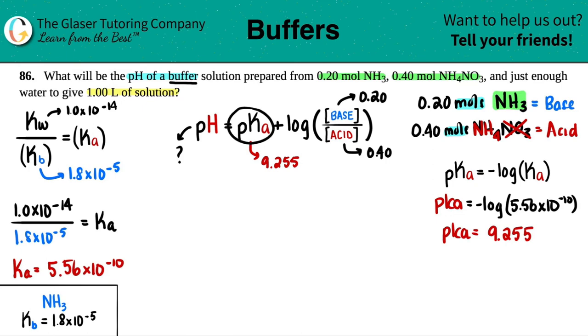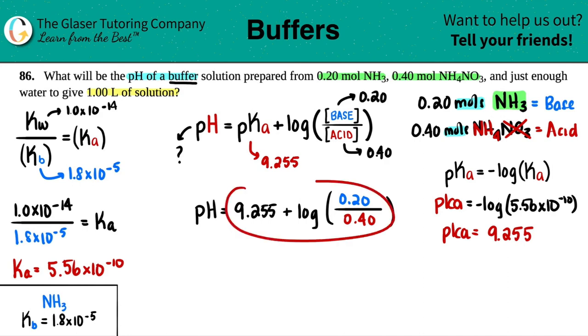So now we have all the numbers. We have the pKa, the amount of the base, the amount of the acid, and we can find the pH. So pH equals 9.255 plus the log of, moles are acceptable, so just the base 0.20 divided by the acid 0.40. You can plug this all into the calculator at once, or if you want, just perform the log first and then add it to this number. I'm just going to do it all at once, and we should get a pH value. So log 0.2 divided by 0.4 plus 9.255.